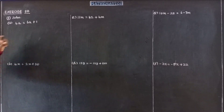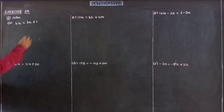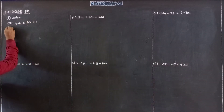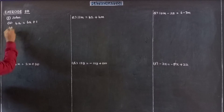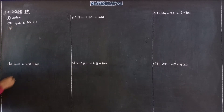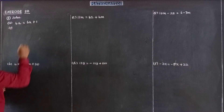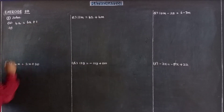Exercise A, equation number 1. Solve the following and find the value of the unknown. The first question: 4A is equal to 6A plus 1.